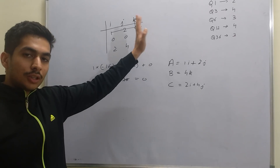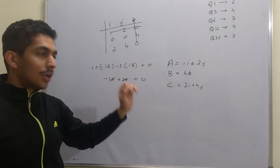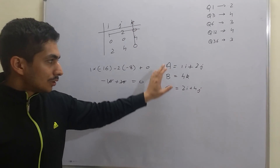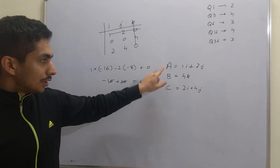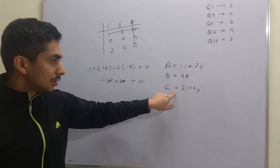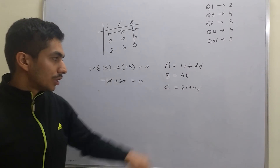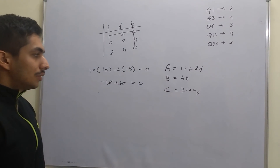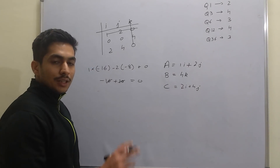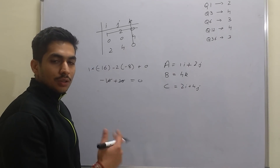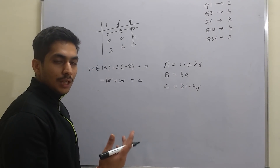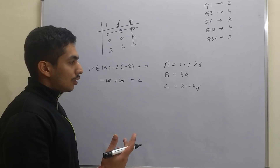Even though I knew the determinant formula, it was very simple. As soon as you see that A is 1i + 2j and C is 2i + 4j, it is like a line - it has two coordinates, so it is like a line.